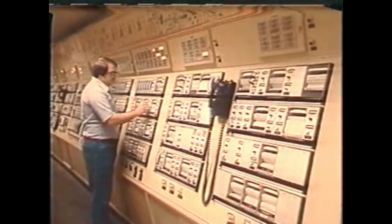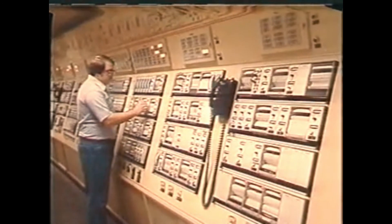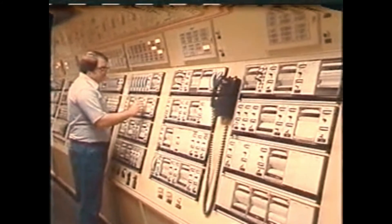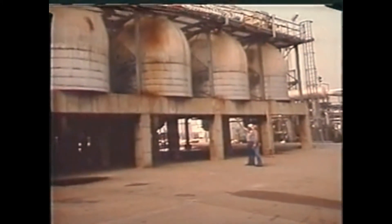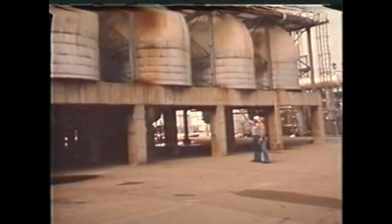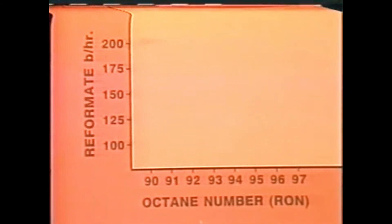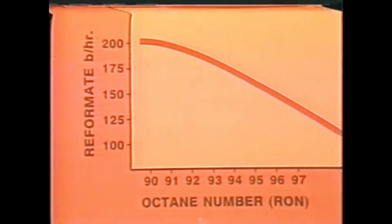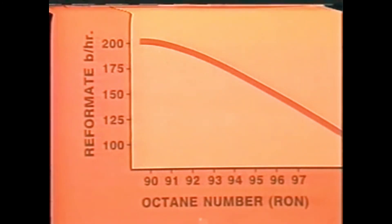In this part of the program, we'll take a look at some of the major operating conditions or variables that must be controlled during the catalytic reforming process, and discuss how these variables affect product yields and quality. Normally, a reformer is operated to produce the maximum amount of reformate that meets a specified octane number. This chart shows the relationship that exists between octane number and yields — as the octane number goes up, the volume of reformate produced goes down. So the higher the octane specifications, the less reformate we are able to produce. This means that if the unit is producing reformate that is above octane specifications, product is being needlessly wasted.